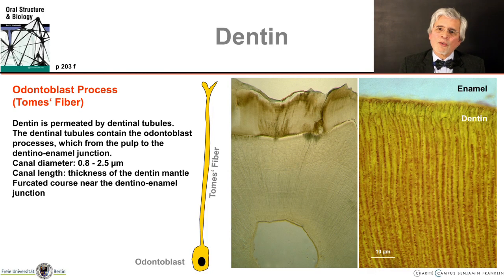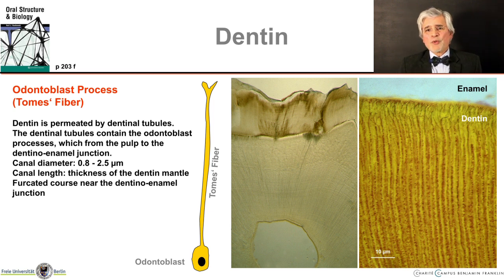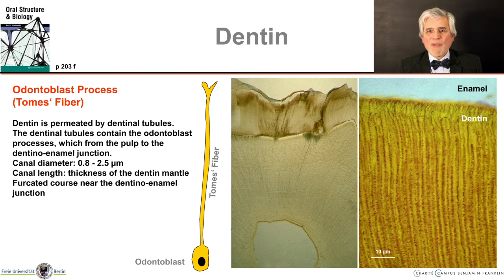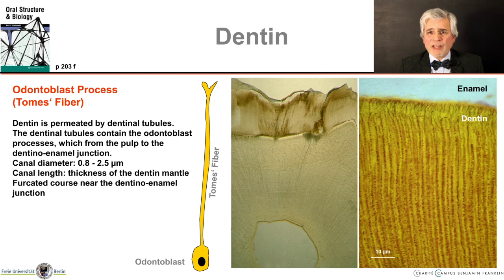We need to say something about the odontoblast process — the long cell extension that was already recognizable in the early stages of development, and now it is getting longer and longer. As the dentine is deposited, the odontoblasts migrate from the dentino-enamel junction further and further toward the pulp as the dentine layer becomes thicker and thicker. The end of the odontoblast process remains at the dentino-enamel junction, and the odontoblast process becomes longer and longer — always about as long as the dentine is thick. They may also take a slightly curved course in some regions, so it is even a little bit longer there — in any case, that can be several millimeters.